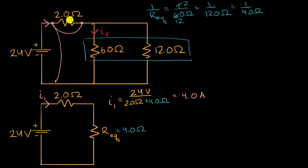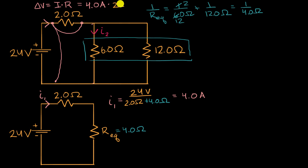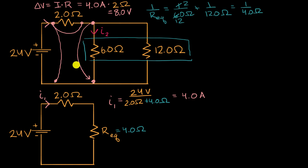The voltage drop across the first resistor equals current times resistance: four amperes times two ohms equals 8.0 volts. If the total voltage difference is 24 volts, and we drop eight volts across the first resistor, then the voltage drop across the parallel section must be 16 volts.